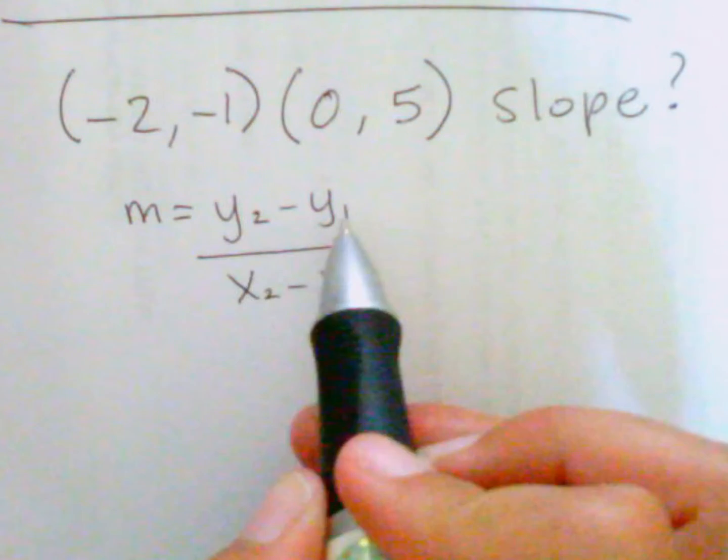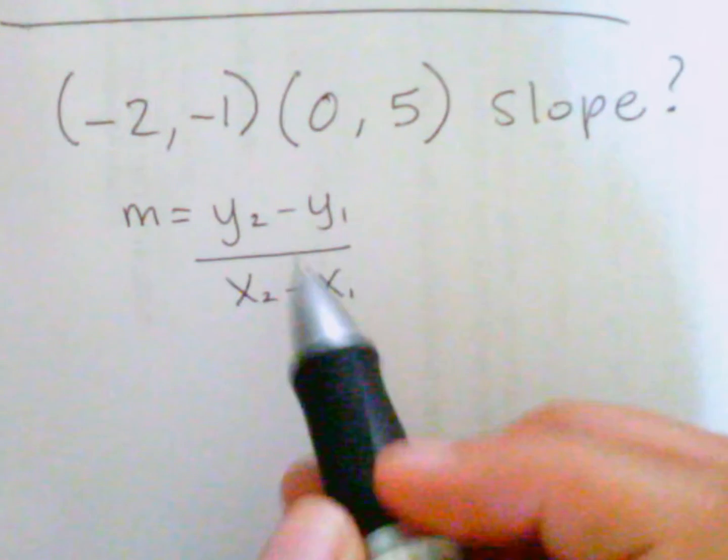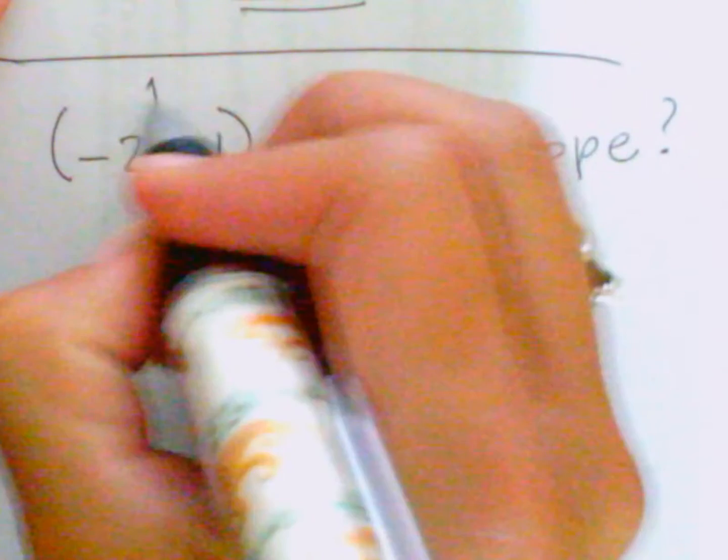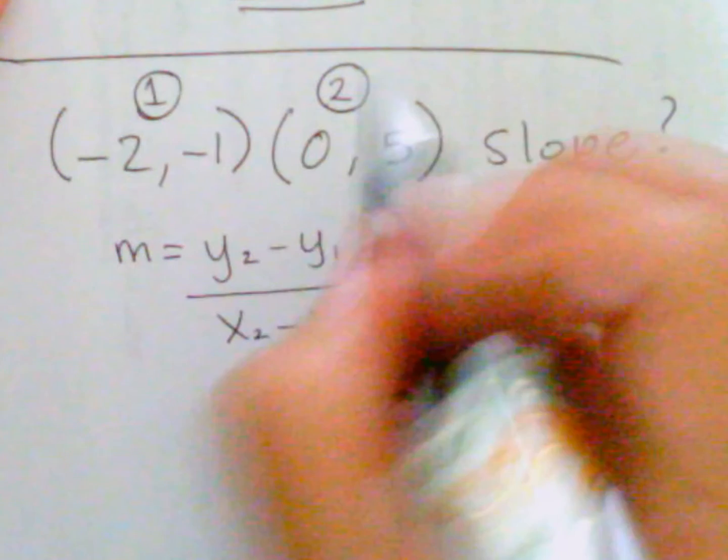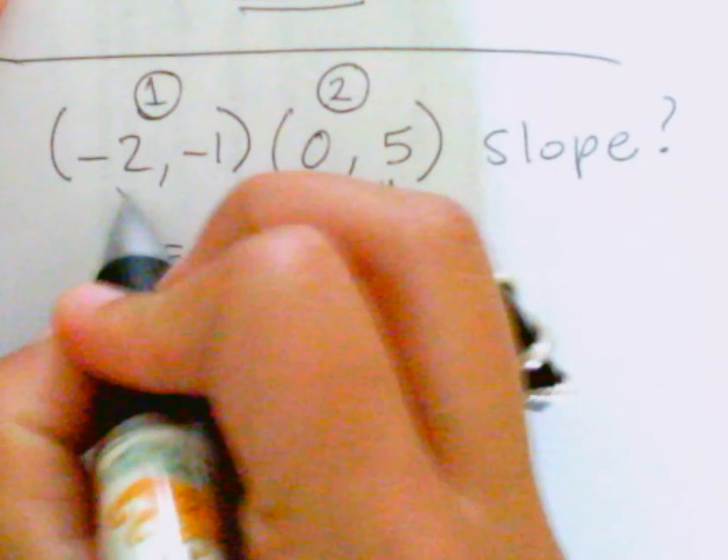So these little subscripts are just indicative of which point we're looking at. So I'm going to call this our first point and this our second point. So my y2, here's my x, here's my y, x, y.